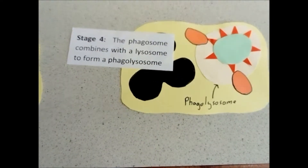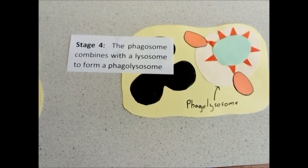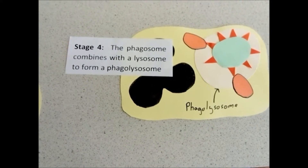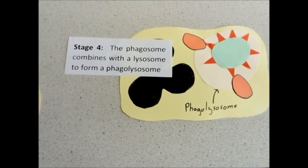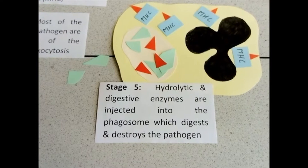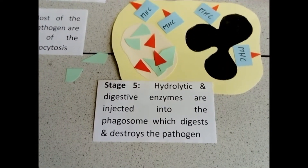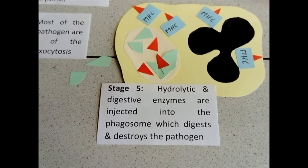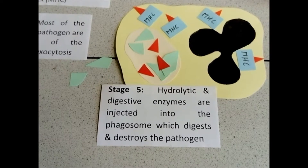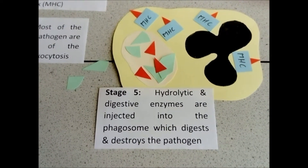The next stage is that two lysosomes within the phagocyte connect to the phagosome to form a phagolysosome. Hydrolytic enzymes, digestive enzymes, and hydrogen peroxide are then injected into the phagosome, which breaks up the pathogen.